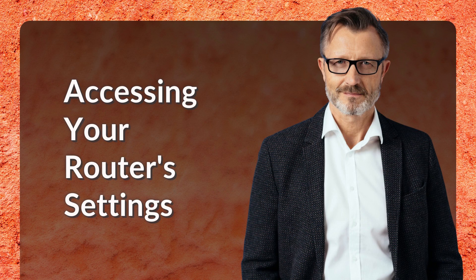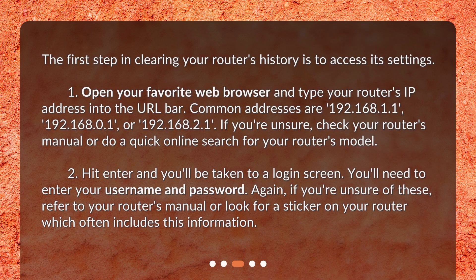Accessing your router's settings. The first step in clearing your router's history is to access its settings. Open your favorite web browser and type your router's IP address into the URL bar. Common addresses are 192.168.1.1, 192.168.0.1, or 192.168.2.1. If you're unsure, check your router's manual or do a quick online search for your router's model.